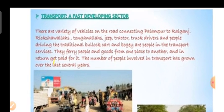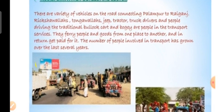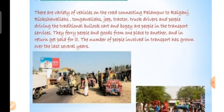Transport is another fast-developing non-farm sector. There are a variety of vehicles connecting Palampur to Raiganj — rickshaw, tonga, jeep, tractor, truck drivers, and people driving traditional bullock carts and bogies. They ferry people and goods from one place to another and get paid for it. The number of people involved in transport has grown over the last several years.